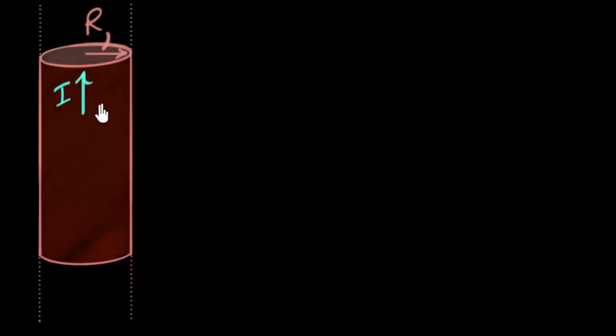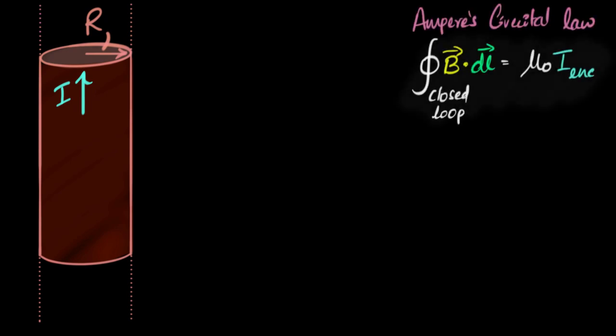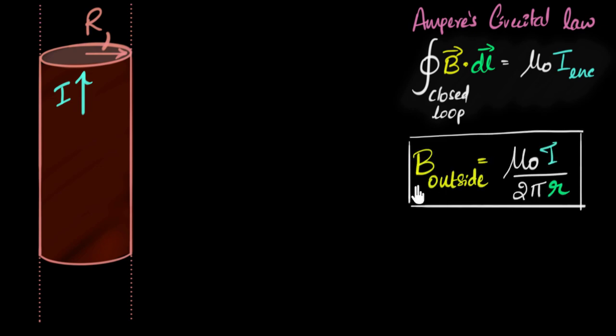We have a long thick wire of radius R carrying a current i, and our goal in this video is to find the magnetic field inside the wire. In a previous video, we already did this, but we calculated for outside the wire, and we did that by using Ampere's circular law. When we simplified, we found the expression for the magnetic field outside to be mu naught i by 2 pi r.